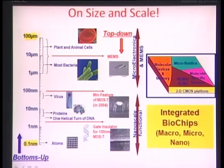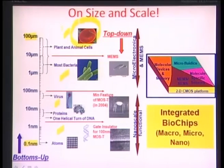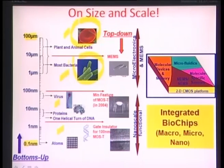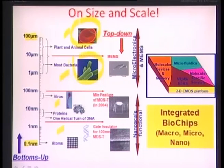Looking at entities next to the scale: most plant and animal cells, including the red blood cell shown here, range from about 10 to 100 microns. The SEM image of a red blood cell is about 20 microns or so. Going a little bit down, this is an E. coli — an SEM image of an E. coli bacteria. Most bacterial cells range from about 1 to 10 microns, so they are at least a tenth smaller than plant and animal cells.